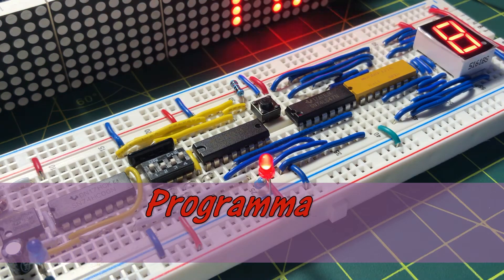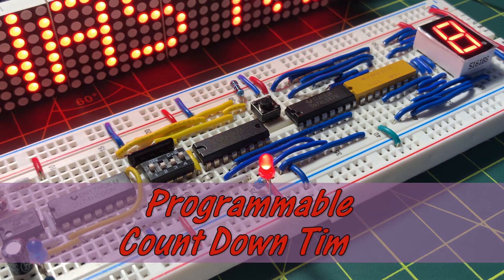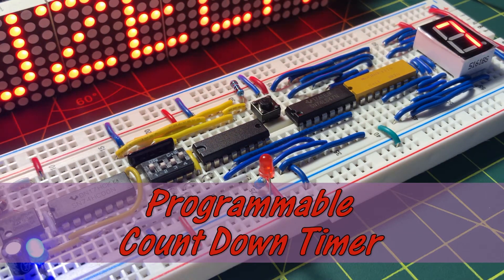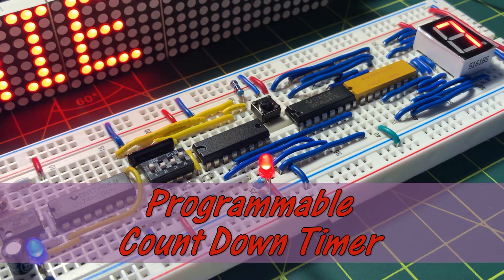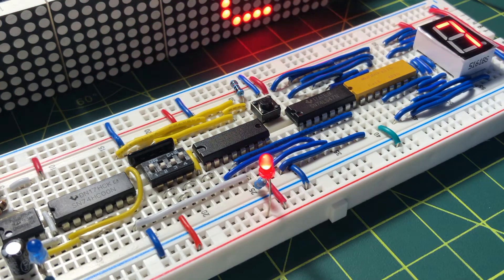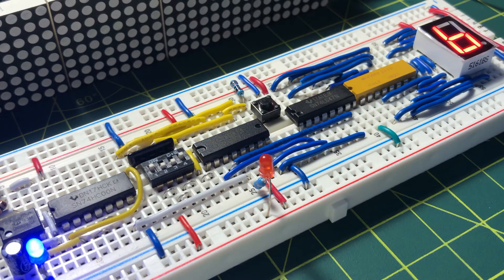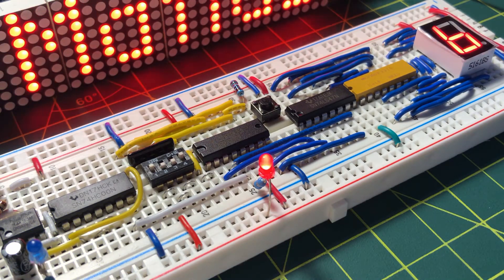This video presents another cool circuit by Forrest MIMS, namely the Programmable Countdown Timer. The circuit uses IC74192 which is a pre-settable 4-bit up-down counter.